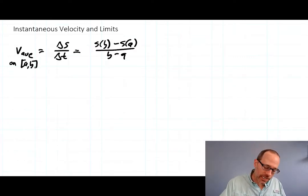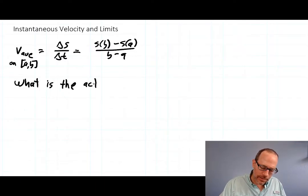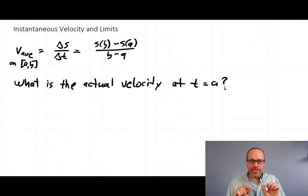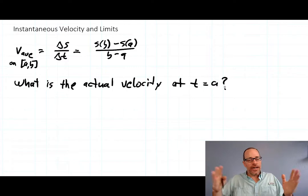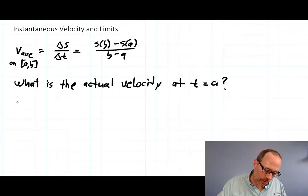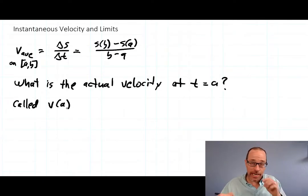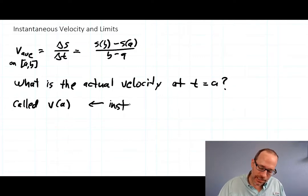This is not. What is the actual velocity at time equals a? I mean how fast are you going at that moment? Not an average over a time interval but how fast at that moment? This is called, once we figure out how to do it, v of a, the velocity at time a. People can also call it the instantaneous velocity.